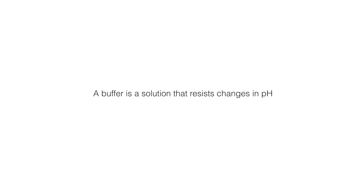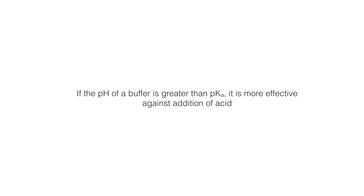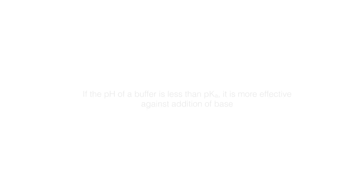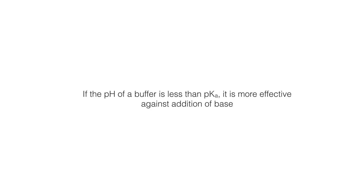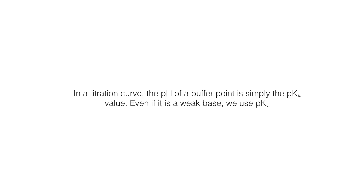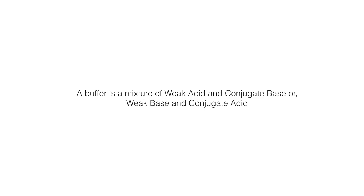Just a recap. A buffer solution is something that can resist changes in pH. If the pH of the buffer is greater than pKa it's effective against further addition of acid. On the other hand if the pH of the buffer is less than pKa that means it's only effective towards addition of more base. In a titration curve the pH at the buffer point is always pKa — even if I have a weak base starting off in the flask it's still pKa. A buffer is just a mixture of weak acid and conjugate base, or a mixture of weak base and its conjugate acid.